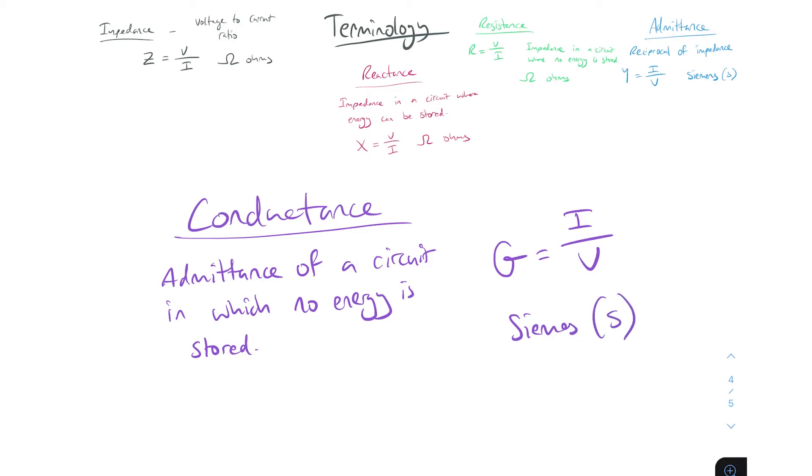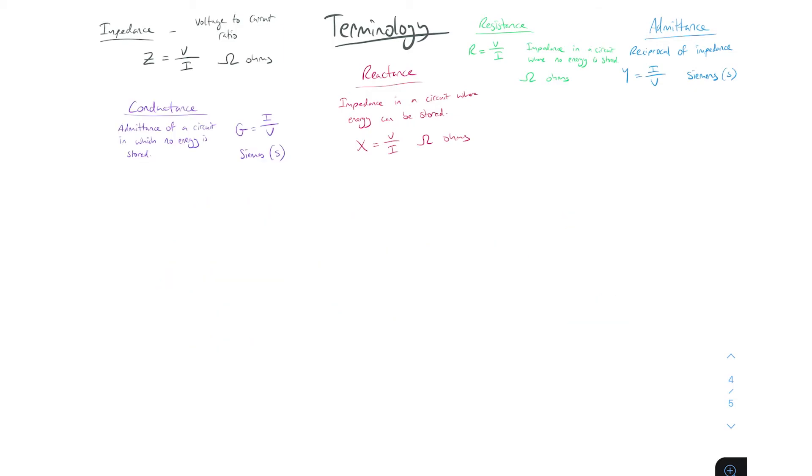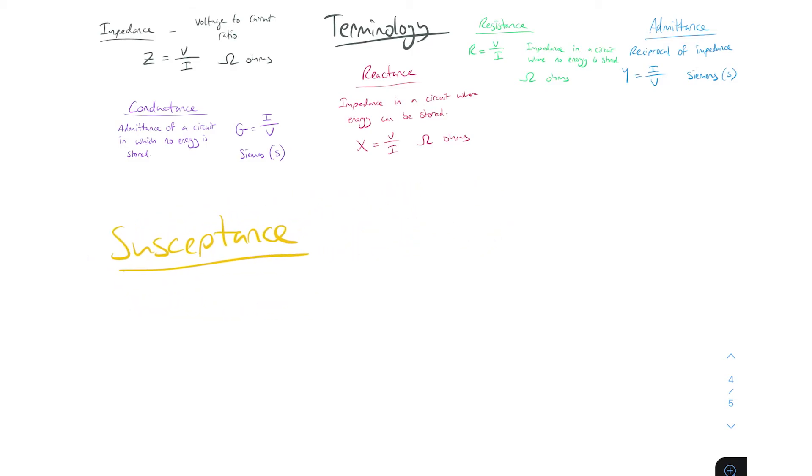Last one now and the world's most confusing video comes to an end. You've got susceptance - try saying that three times. Susceptance, susceptance, susceptance. Even I messed it up. To explain this one I'm going to bring admittance back into the frame. Impedance is the voltage current ratio, admittance is the reciprocal of impedance.